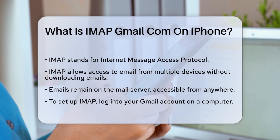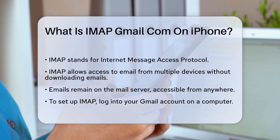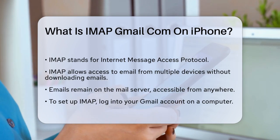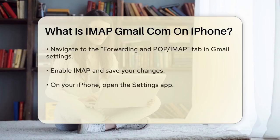To set up IMAP for your Gmail account on your iPhone, you need to follow a few steps. First, log into your Gmail account on a computer and go to the Settings. Here, you'll find the Forwarding and POP/IMAP tab. Enable IMAP and save the changes.